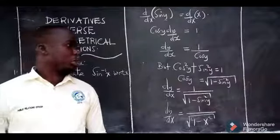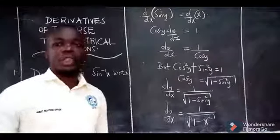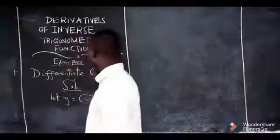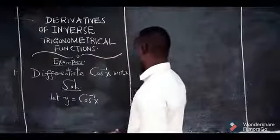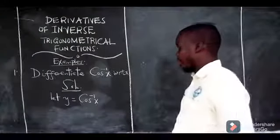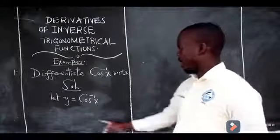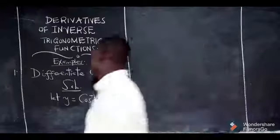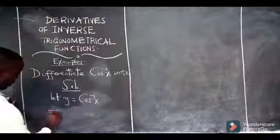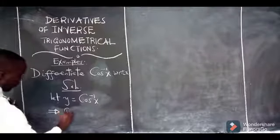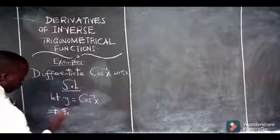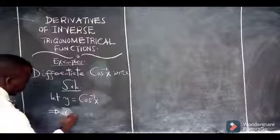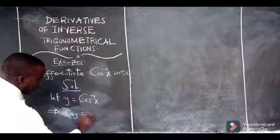Let us move on to another question. Question 2 tells us to differentiate cos inverse of x with respect to x. Definitely, we have to begin by letting y equal to cos inverse of x, like we did in the previous question. So this implies that cos of y is actually equal to x.